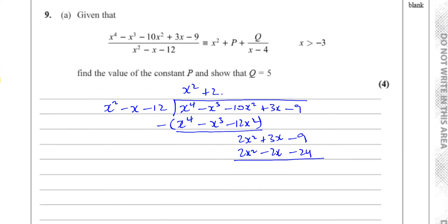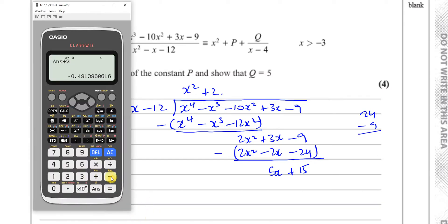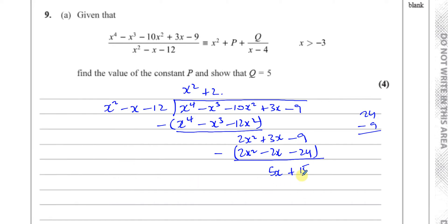And now when I subtract these two from each other, I should get my remainder. That's going to give you 0. You're going to have minus 3 minus minus 2, which is 5 — so that's 5x. And minus 9 minus minus 24, which is 24 minus 9, which gives you 15. So you end up with 5x plus 15, and that's your remainder.